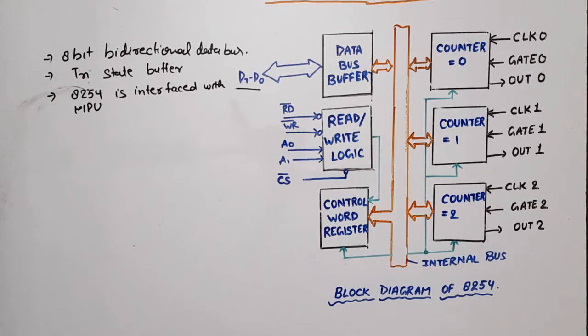8254 is interfaced with MPU, means that whatever information transfer will be transferred to microprocessor and counter, means that in PIT, it will be through these data bus.